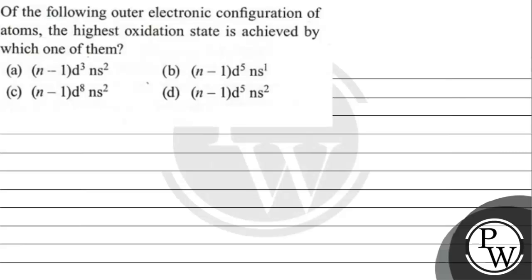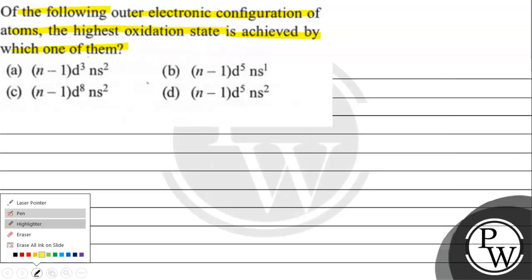Hello! Let's read this question. The question says: of the following outer electronic configurations of atoms, the highest oxidation state is achieved by which option? Option A: (n-1)d³ns², Option B: (n-1)d⁵ns¹, Option C: (n-1)d⁸ns², Option D: (n-1)d⁵ns².